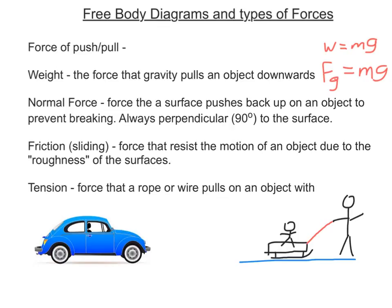Force of push or pull is self-explanatory — you push or pull something, you apply a force to it. We'll generally label that Fp. Weight, also known as the force of gravity, is going to be mass times 9.81. You can write that as W = mg or Fg = mg — those two equations are exactly the same. You need to get it in your head that weight and the force of gravity are the same thing.